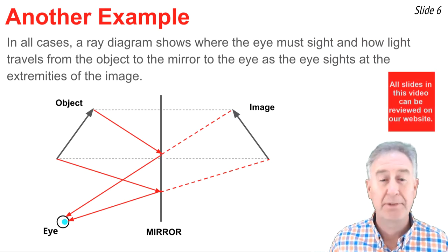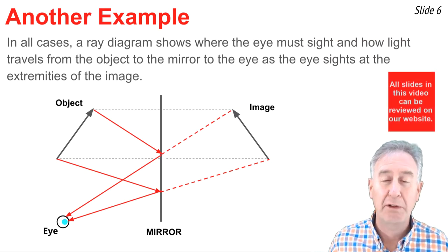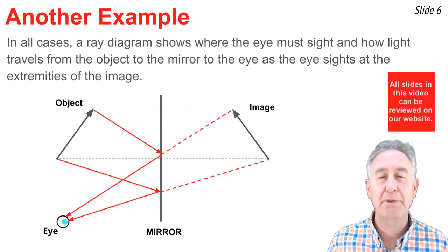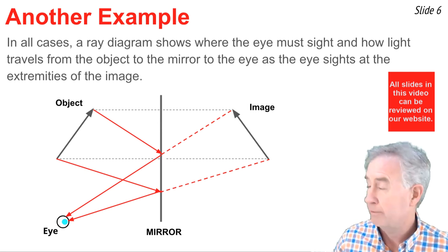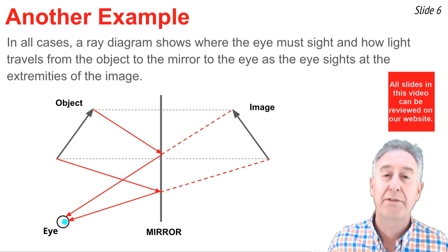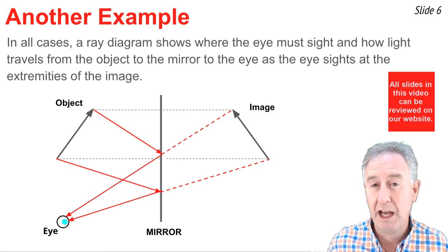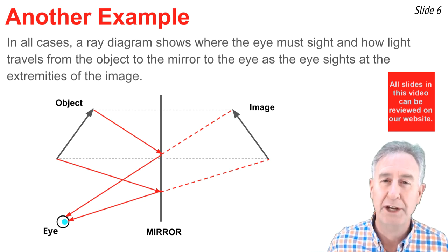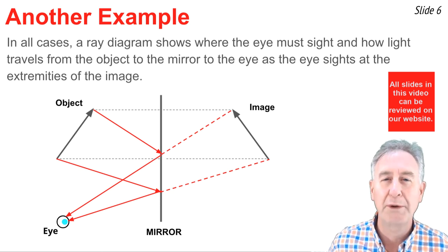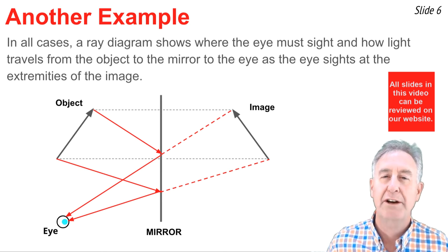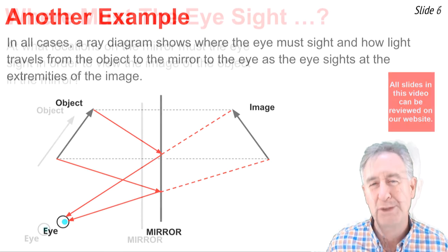Here is one more ray diagram. This time the object is an arrow that is angled, not vertical. But that doesn't make any difference — we still go through the same three steps for constructing the ray diagram. We locate the image of the object, then we draw the reflected rays along the line of sight from the eye to the two extremes of the object. Finally, we draw the incident ray from the extremes of the object to the point where the line of sight intersects the mirror. In all cases, a ray diagram shows where the eye must sight and how light gets from the object to the mirror to the eye.